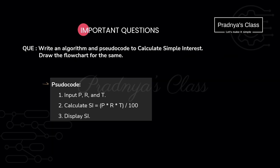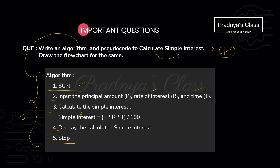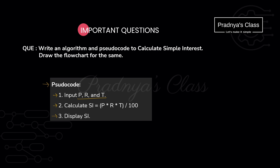Now let's write the pseudo code for the same problem. Pseudo code is an informal way of writing the steps, so we need not follow any rules. The first step is input — we take the required values. Followed by the calculation, and finally we display the result. You may wonder why there are two options — in the case of algorithm we follow rules, but in pseudo code we don't. We write either algorithm or pseudo code, not both.